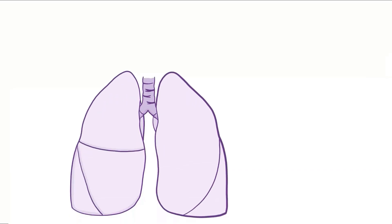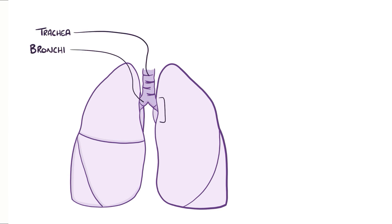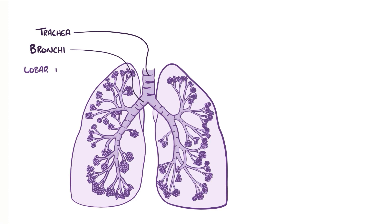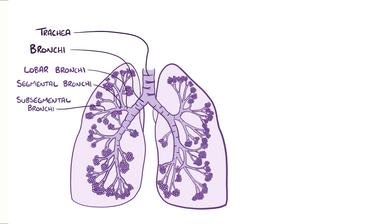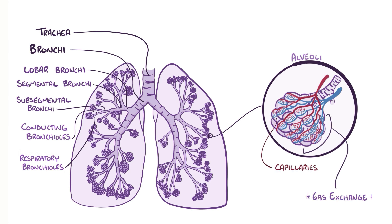Air enters the respiratory tract through either the nose or mouth, and flows down the trachea, which divides into the right and left bronchi. Each bronchus enters its respective lung at the hilum, or the root of the lung. The bronchi then divide into lobar bronchi, which divide into segmental bronchi, then into subsegmental bronchi, which further branch to form conducting bronchioles and then respiratory bronchioles, which end with small sacs called alveoli that are surrounded by capillaries — where gas exchange happens.